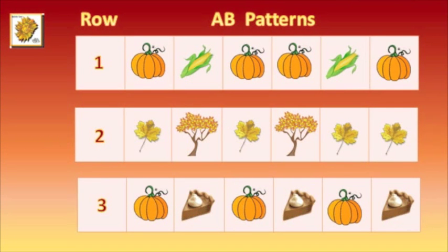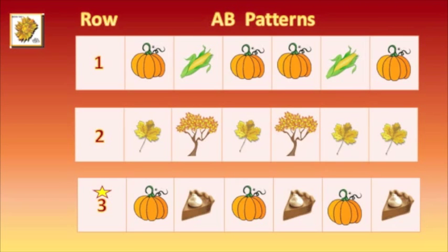Now, we have three rows of patterns. You have to find the row that's the correct AB Pattern. Which one is it? The answer is three. Great job.